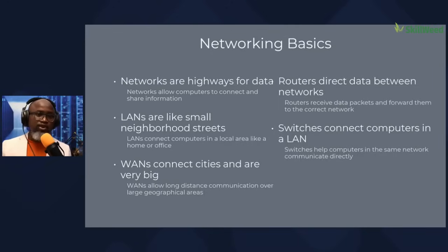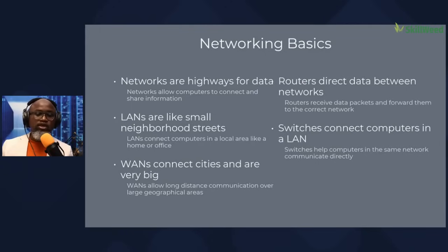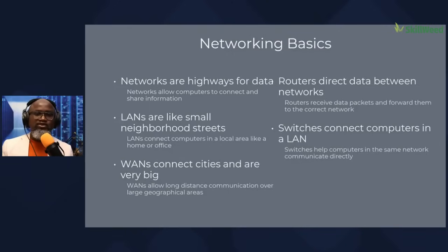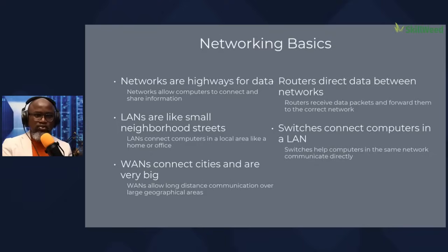Some key things to know: there is something called LAN, local area network. Your home is considered a local area network — you've connected your devices within your home or office. Wide area network means connecting between big cities, big geography. Your workplace today would be considered a WAN because you have multiple locations that need to speak with each other. Another one you all know is the router — routers receive data packets and forward them to the correct network. Then switches connect computers to your local area network — it's a physical device that allows you to connect several printers or laptops together.